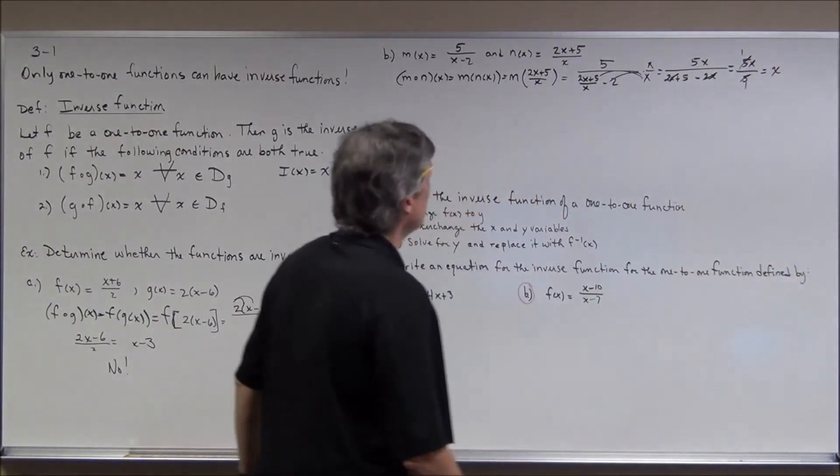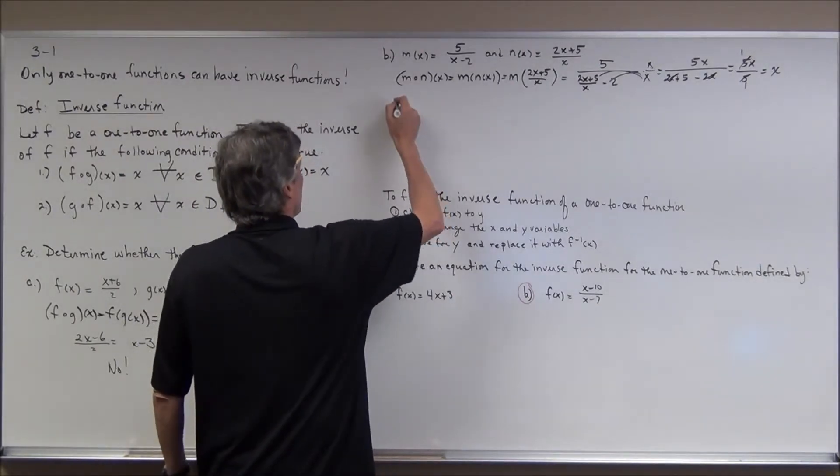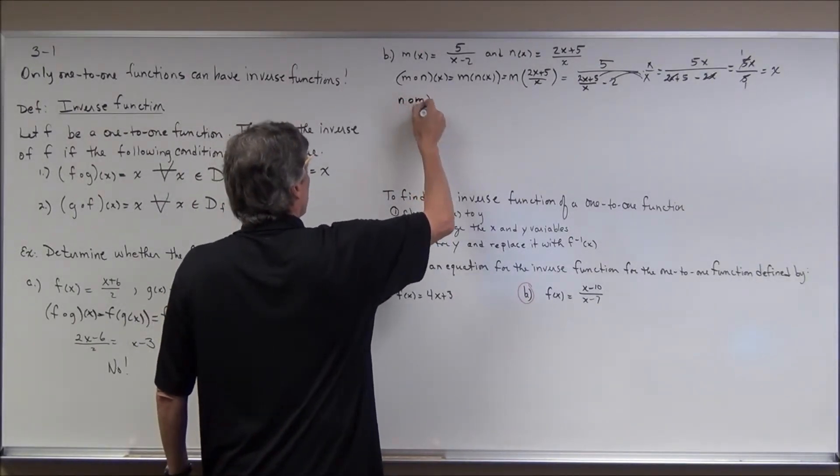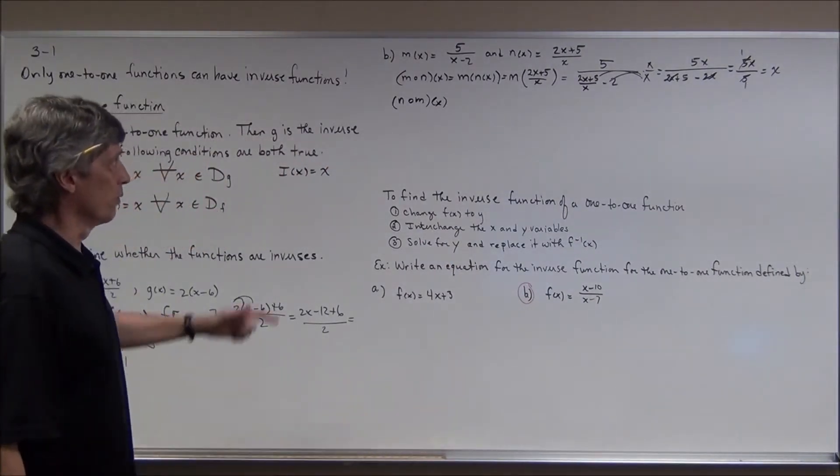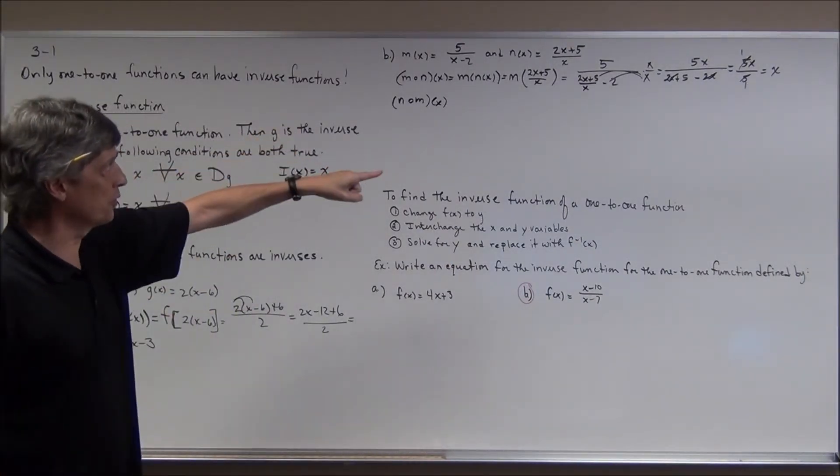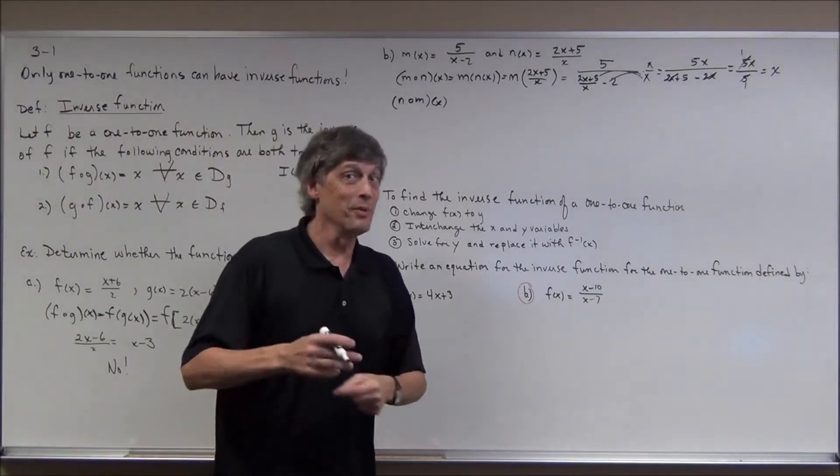So it works this way. Now if it works the other way, we've got it. So let's go for n circle m of x. Now you're probably wondering, well, if it works one way, aren't we assured that it's going to work the other way if we interchange them? Composition is not commutative.